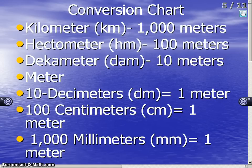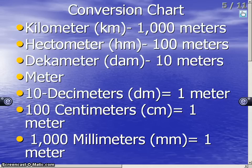The conversion chart shows that one kilometer equals a thousand meters, a hectometer equals a hundred meters, a decameter equals ten meters, a meter is just a meter, ten decimeters equals one meter, a hundred centimeters equals one meter, and one thousand millimeters equals one meter.